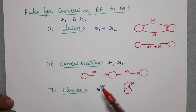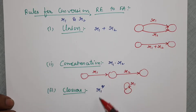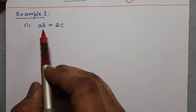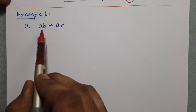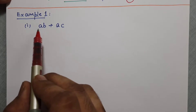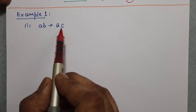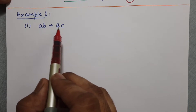Many times, if we follow these rules, the resultant automata for any given regular expression will be non-deterministic, but we don't have to worry because we have the conversion rule of NFA to DFA. Let us understand this by means of an example. Consider this regular expression AB plus AC — the automata accepts only two words: AB or AC.